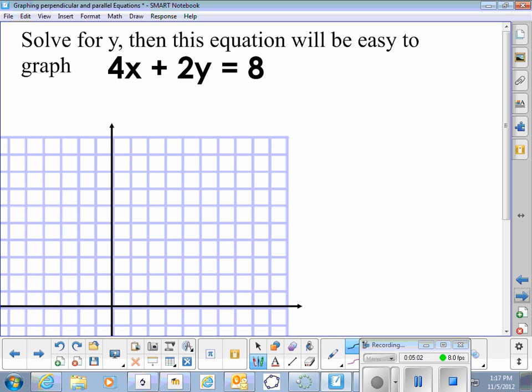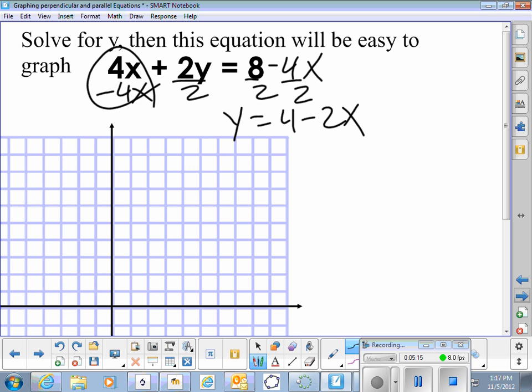Let's solve this one for y. Let's subtract our 4x, divide by 2, we have y equals 4 minus 2x. Each square being 1, starting at 4, going down 2 over 1, down 2 over 1.